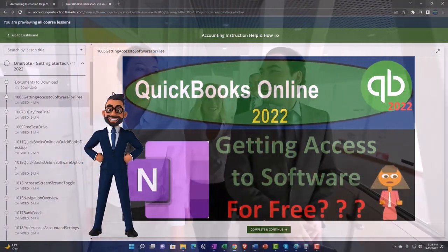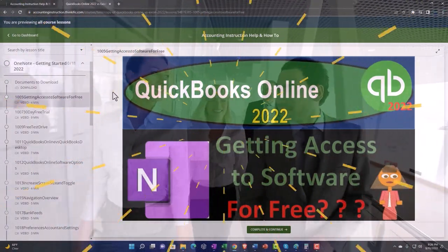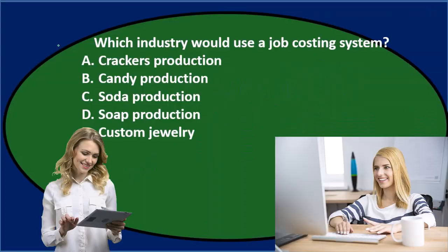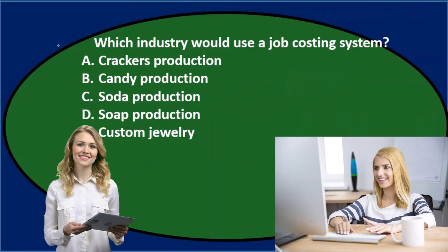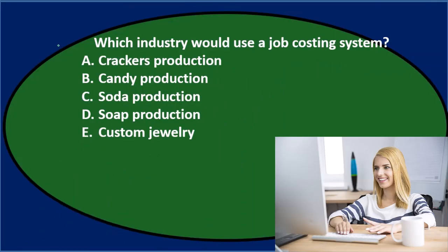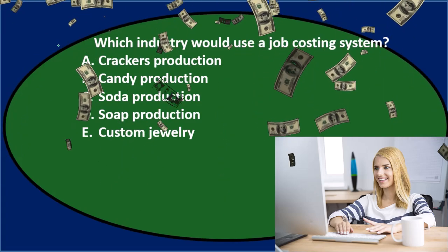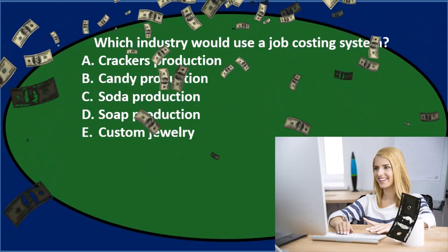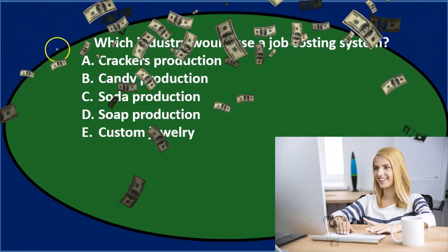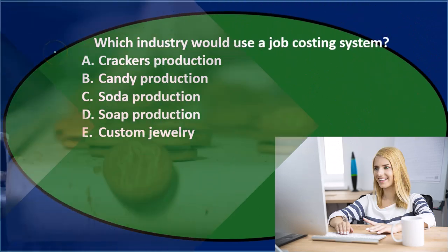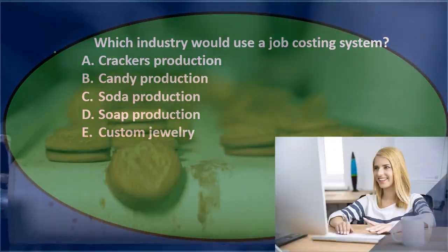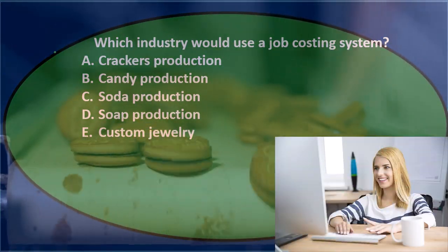The job cost system applies to specific inventory because the items are different, and the process cost applies to the process because all the inventory is the same. So if we have crackers that we're making, it seems like they're all the same, so we're probably not going to use a job cost there.